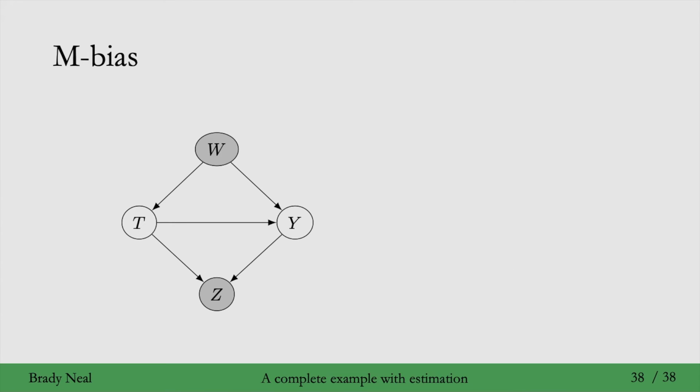To be fair to the general culture around potential outcomes, the general rule, as I said before, is to not adjust for post-treatment covariates, like Z here. So if we don't adjust for that, that's this graph, then the culture around potential outcomes would also lead to an unbiased estimate, if the researcher makes sure to know that Z is post-treatment. However, this rule to adjust for all covariates except for post-treatment covariates can't prevent M bias.